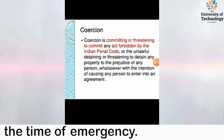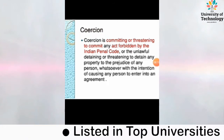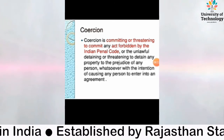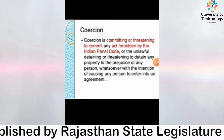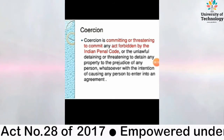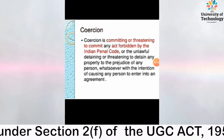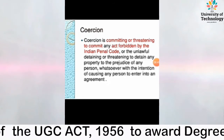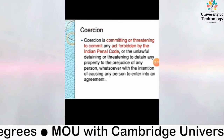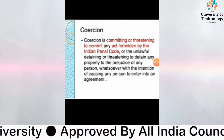दूसरी पार्टी को contract में लाने के लिए उसकी property को illegal तरीके से रोकना या रोकने की धमकी देना — और इन सब करने का उद्देश्य उसे contract करने के लिए मजबूर करना — यह Coercion यानि उत्पीड़न है। जैसे मारपीट करना, किसी की personal freedom रोकना — यह सब IPC के अंतर्गत restricted है। अगर ऐसा करके या धमकी देकर किसी को contract में लाया जाए, तो ऐसा contract voidable होता है।